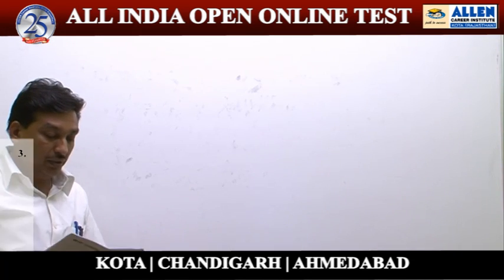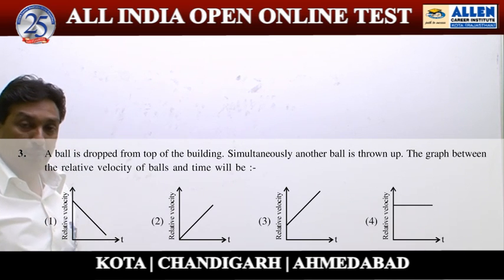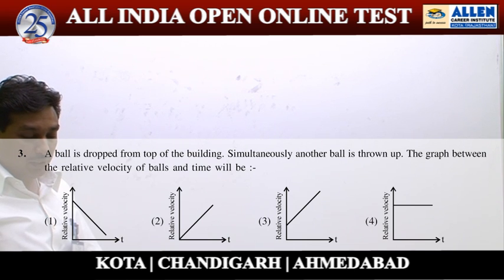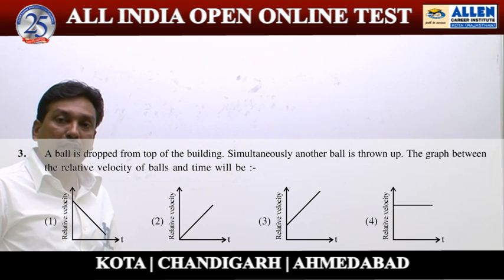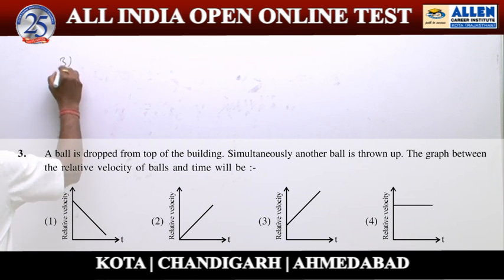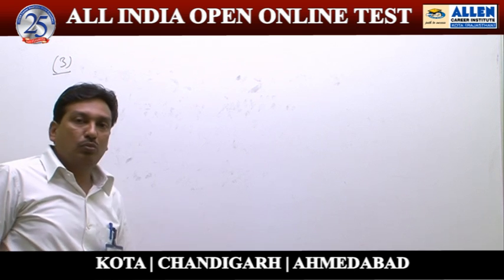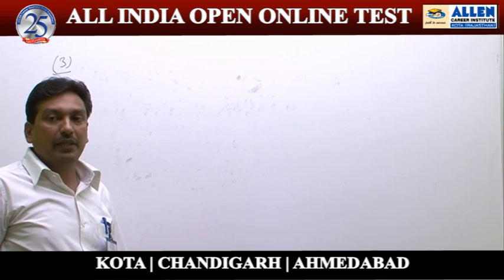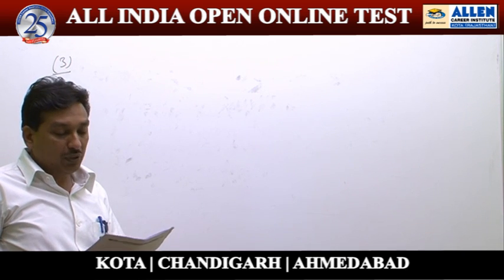Question number 3: a ball is dropped from the top of a building and simultaneously another ball is thrown in the upper direction. We have to draw the graph between the relative velocity of the balls and time. Since both balls are in the air, the relative acceleration of both balls becomes 0, and therefore the relative velocity must be constant.